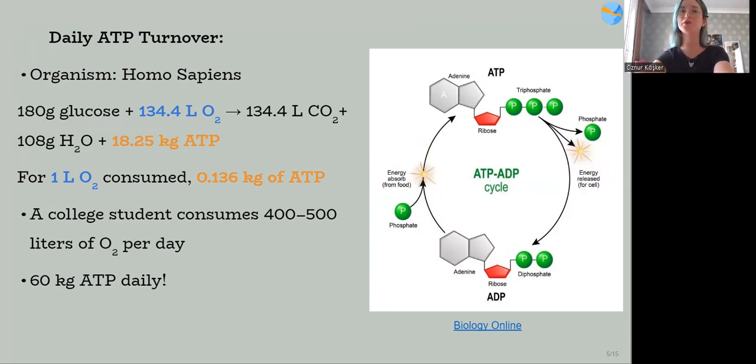But how can we measure the amount of ATP used? One way is measuring the consumed oxygen amount. This equation shows the oxidation of glucose and transferring the energy inside it to ATP. From this equation, this is the ATP amount produced per liter of oxygen. An average college student consumes around 400 to 500 liters of oxygen per day. This means 60 kg of ATP is recycled on a daily basis.